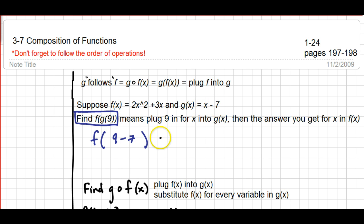If we plug 9 into G, we're gonna get 9 minus 7, because the G function is something minus 7. The something we're using in this case is the number 9. 9 minus 7 is 2, so now we're gonna calculate F of 2. So I'm gonna write the F function, but instead of putting an X in, I'm gonna leave an empty space.